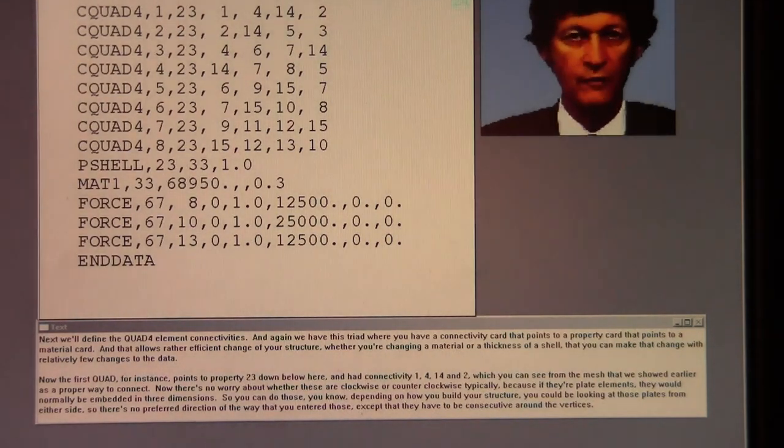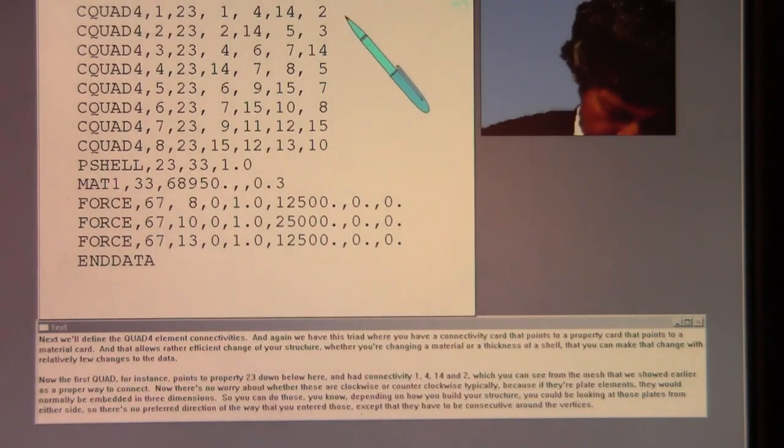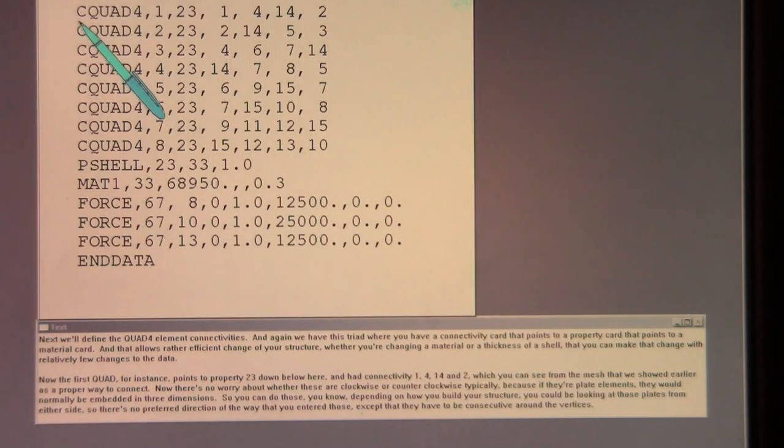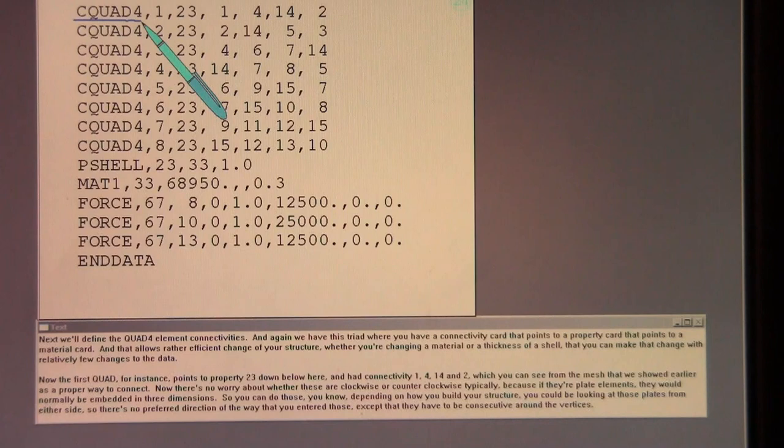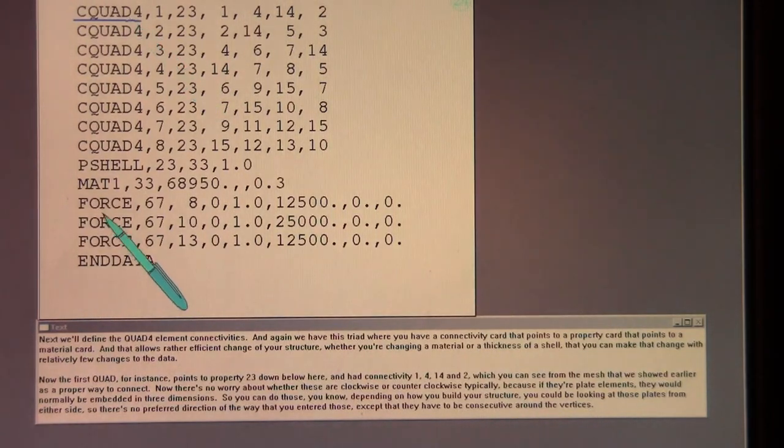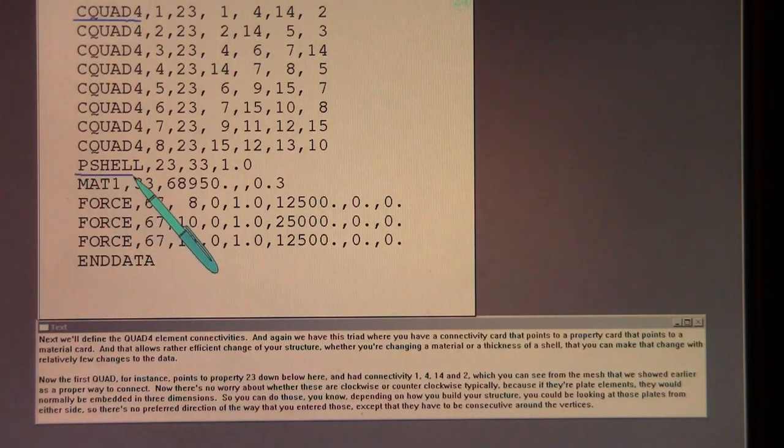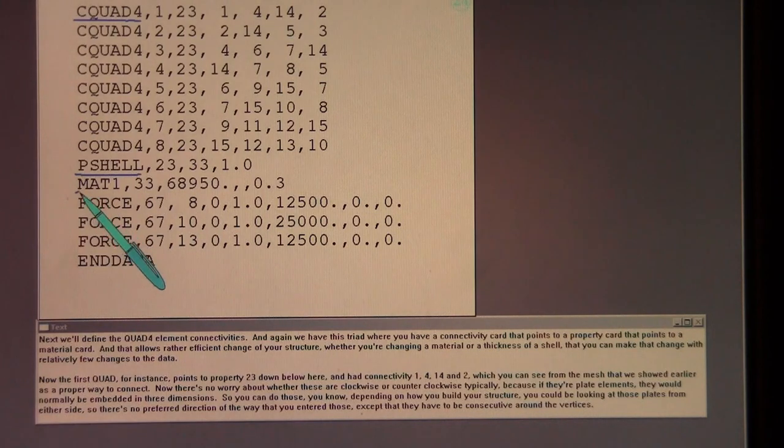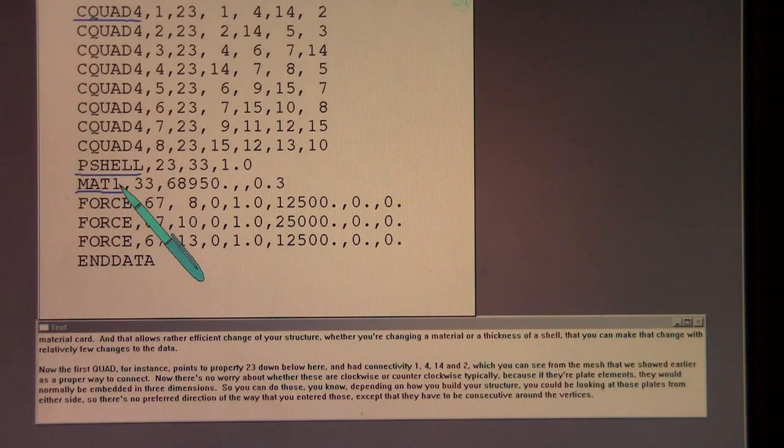Next, we'll define the quad 4 element connectivities. And again, we have this triad where you have a connectivity card that points to a property card that points to a material card. And that allows rather efficient change of your structure, whether you're changing a material or a thickness of a shell, that you can make that change with relatively few changes to the data.